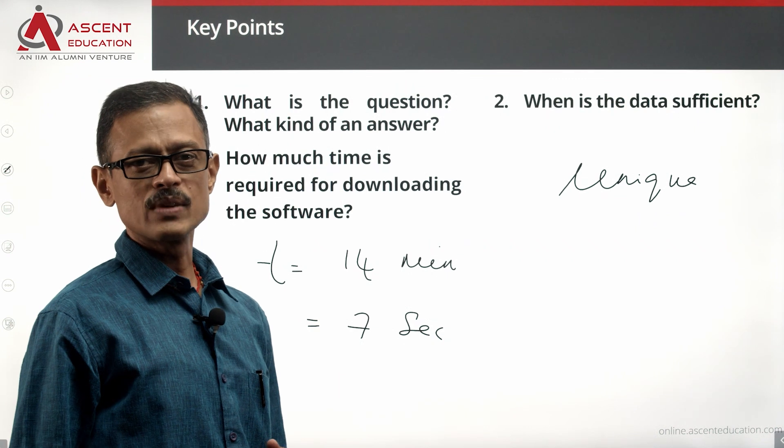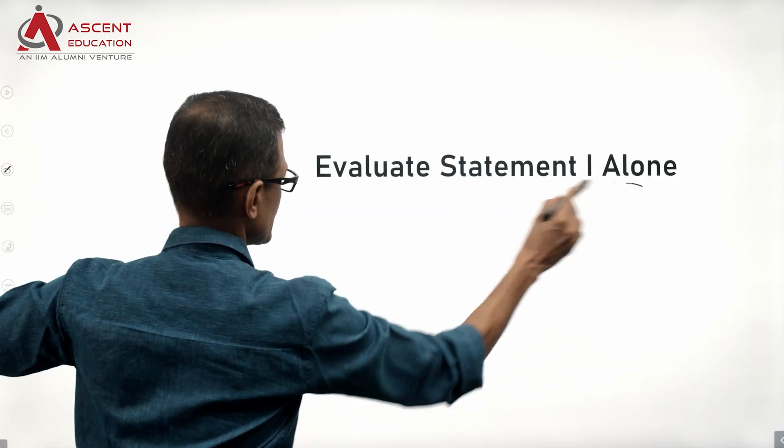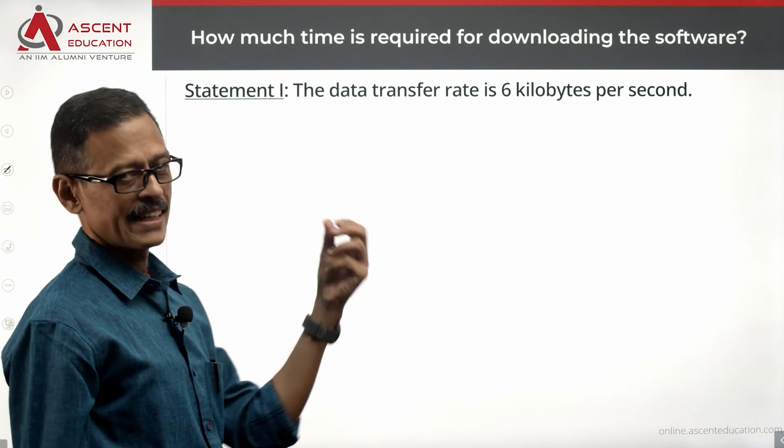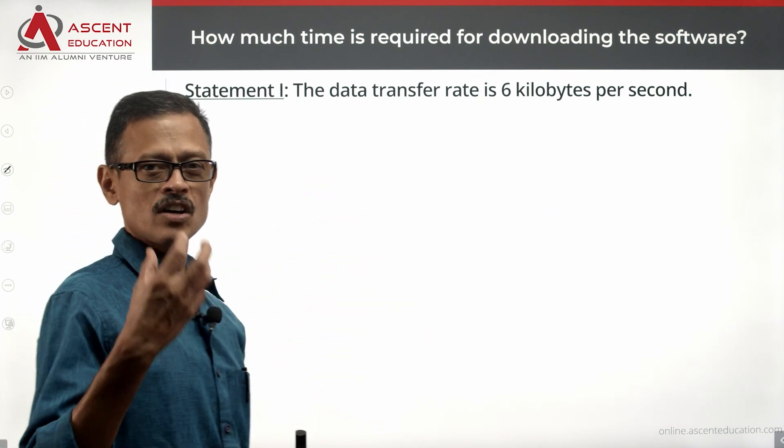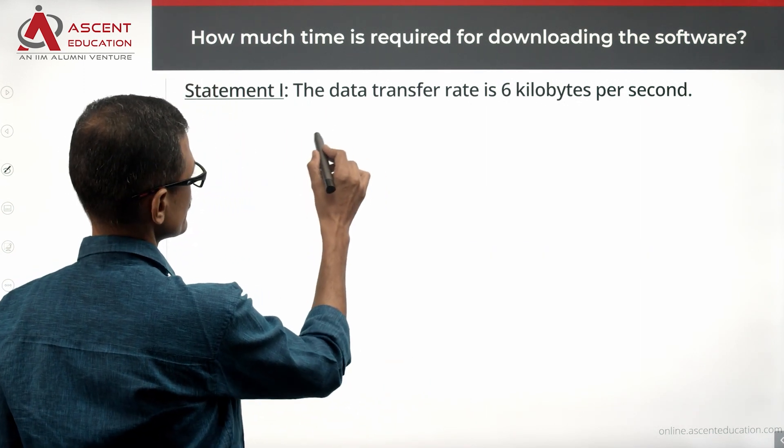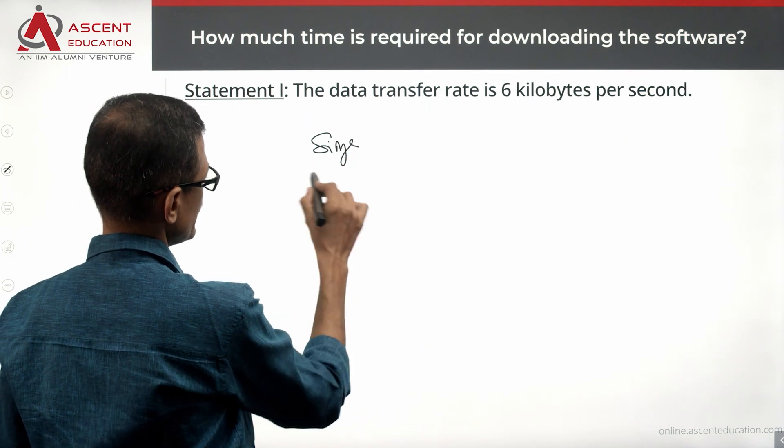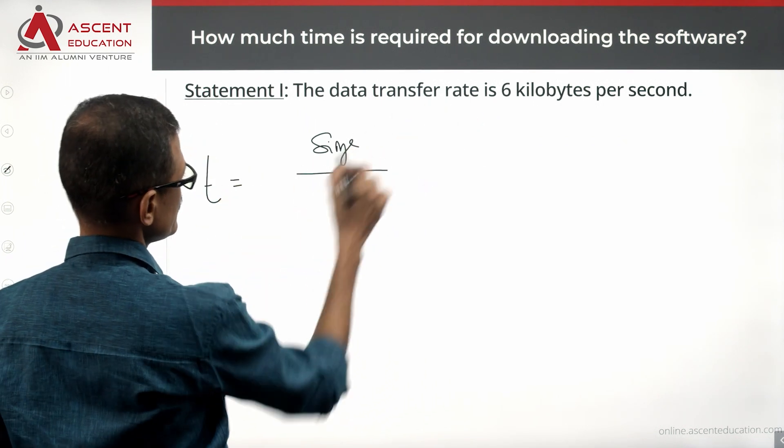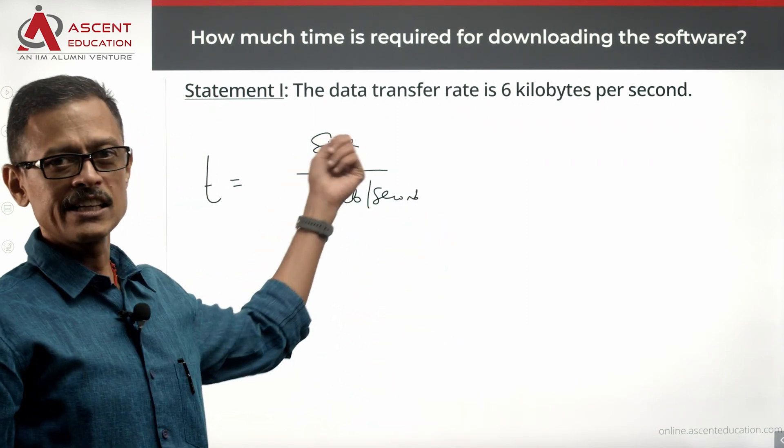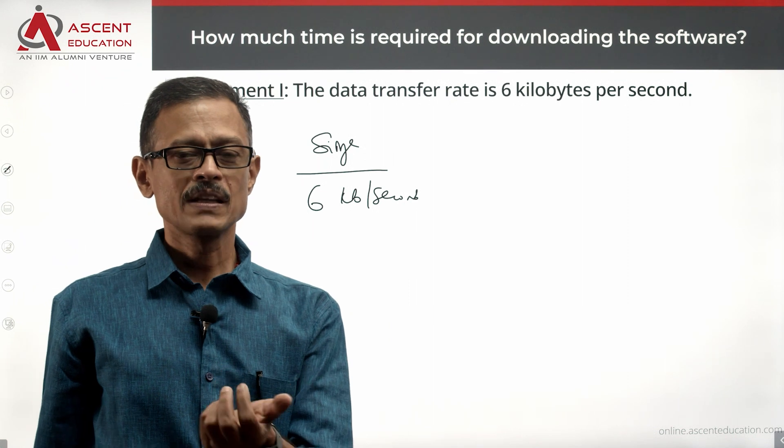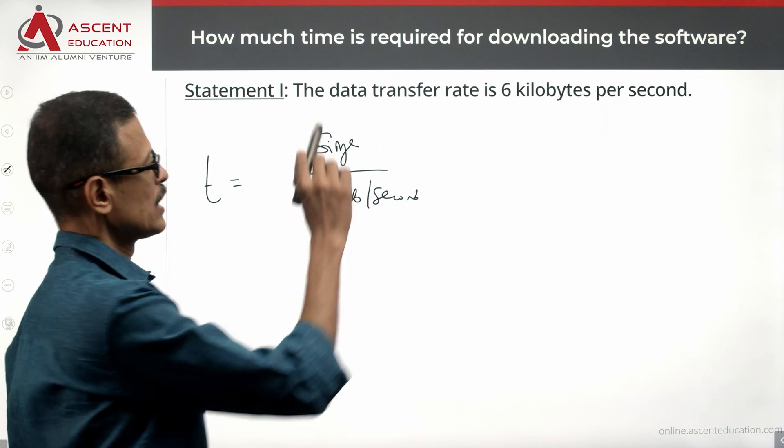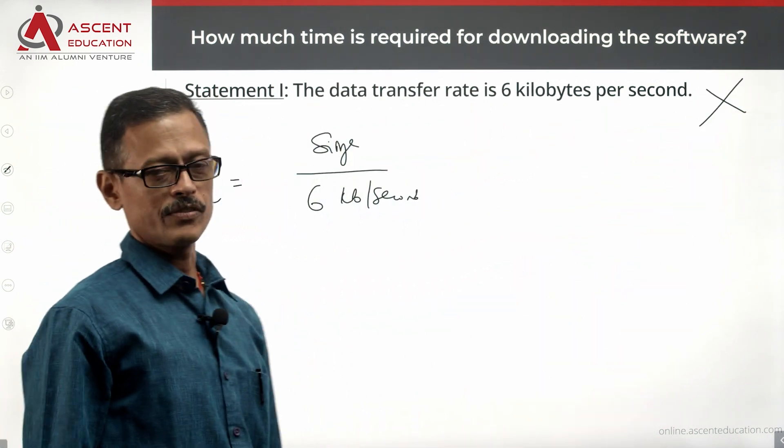Let's see whether the statements will give us that. Start with statement 1, evaluate statement 1 alone. The data transfer speed is 6 kilobytes per second, and without the software size - if the total volume to be downloaded, the size of the file divided by time taken is equal to 6 kilobytes per second, without the size we will not be able to answer. So statement 1 alone is not sufficient.